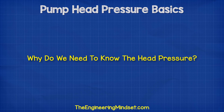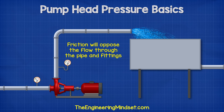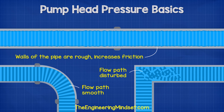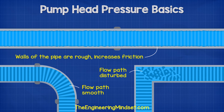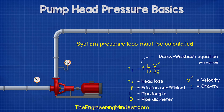Why do we need to know head pressure? Pumps are usually used to move liquid to a higher region, so we need to ensure the pump can reach this elevation. As we pump liquid through the pipes and fittings, friction will try to oppose the flow. This occurs from the walls of the pipe but also disturbances to the flow path, causing pressure losses which waste energy from the pump. The amount of friction depends on the liquid type as well as the materials and fittings used. Therefore, we must calculate how much friction or pressure loss our system will generate and ensure that the pump we select can overcome this.